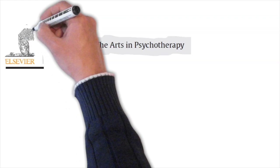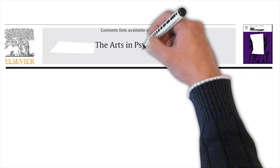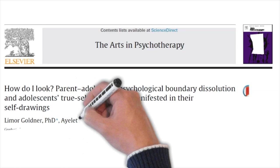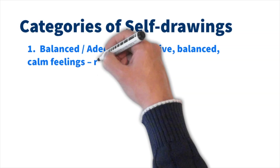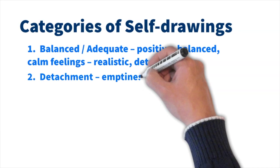A journal in Israel, the Arts in Psychotherapy, published an article that discussed teen true self-behavior as manifested in their self-drawings and enumerated four categories of adolescent self-drawings. The four categories are balanced, adequate, which reflect positive, balanced, calm feelings. They're realistic and detailed.